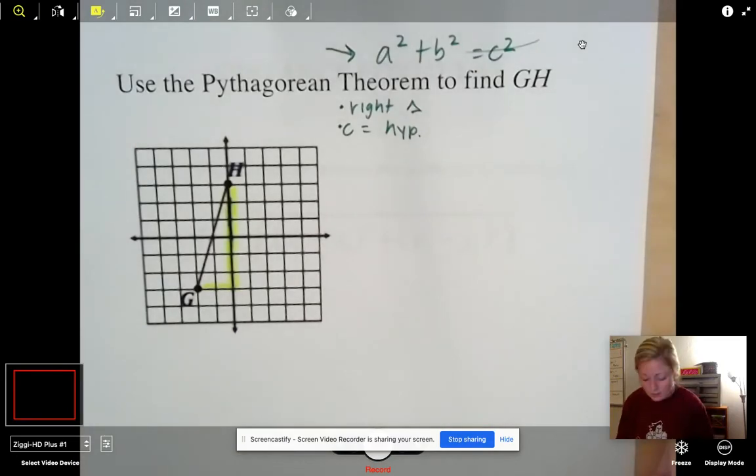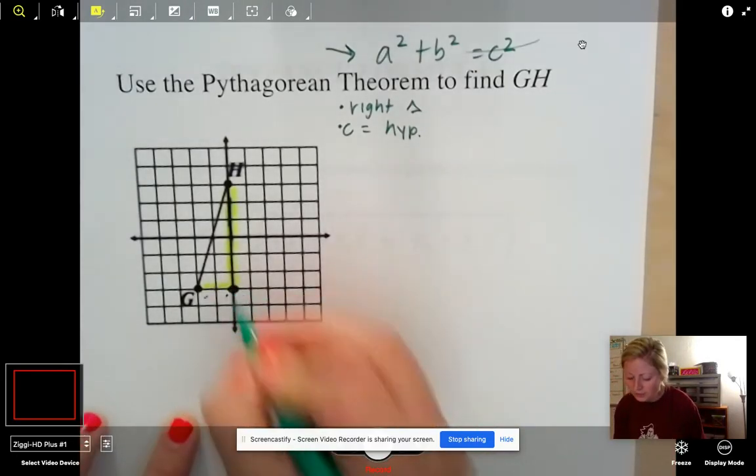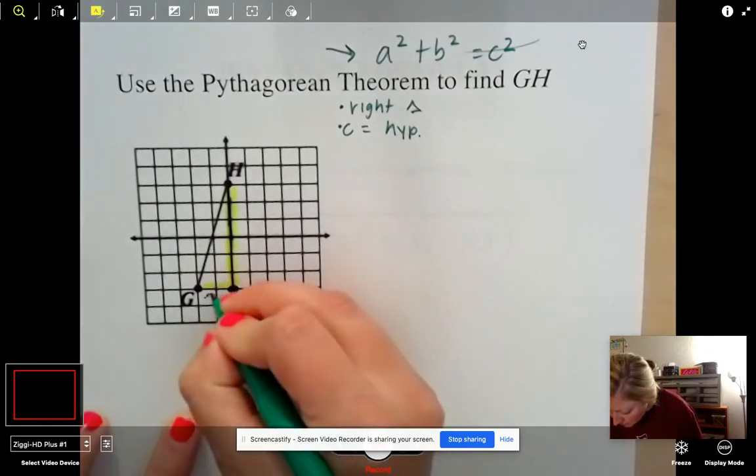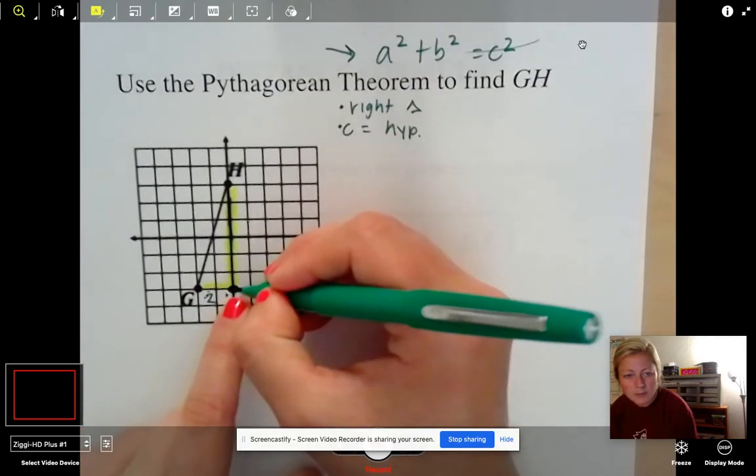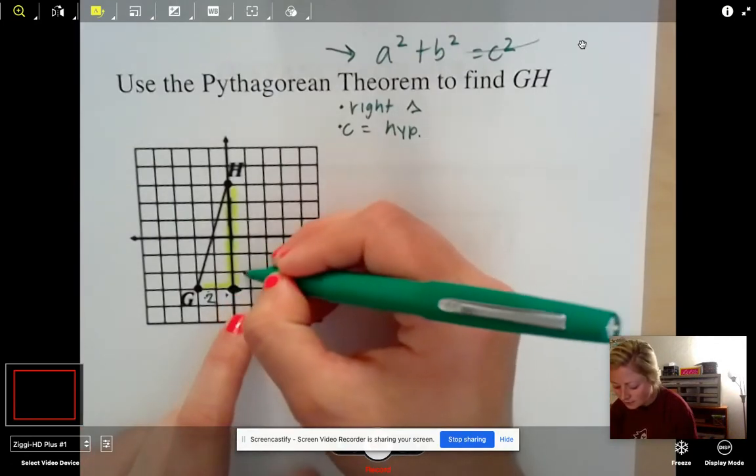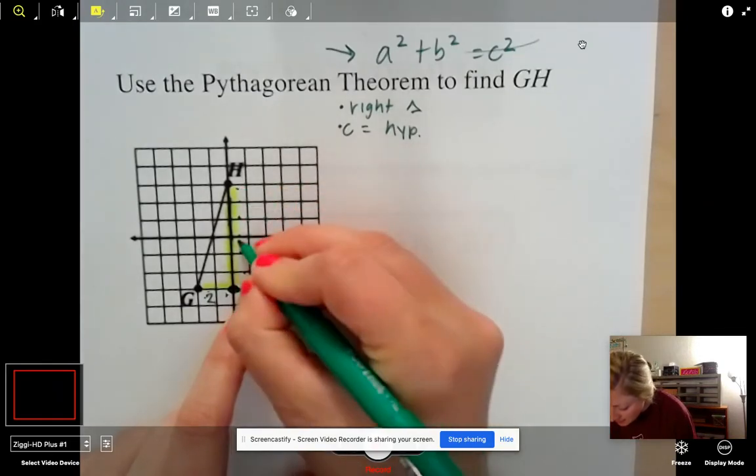And now we can kind of count because look, how many spots is G from this corner here. Well, that's a two, right? One, two. Now how high up is H from this point here? Let's count. There's one, two, three, four, five, six. So six.